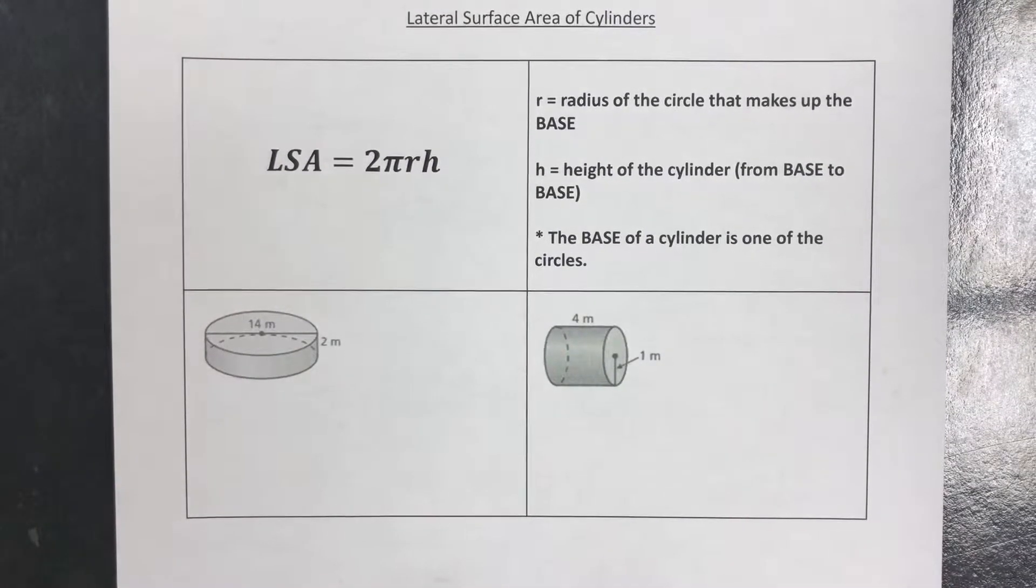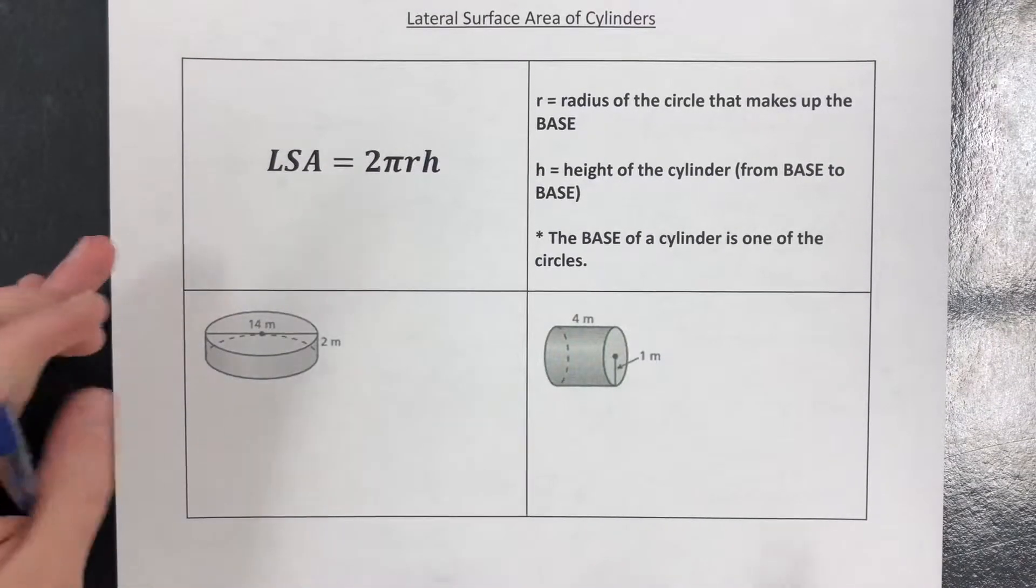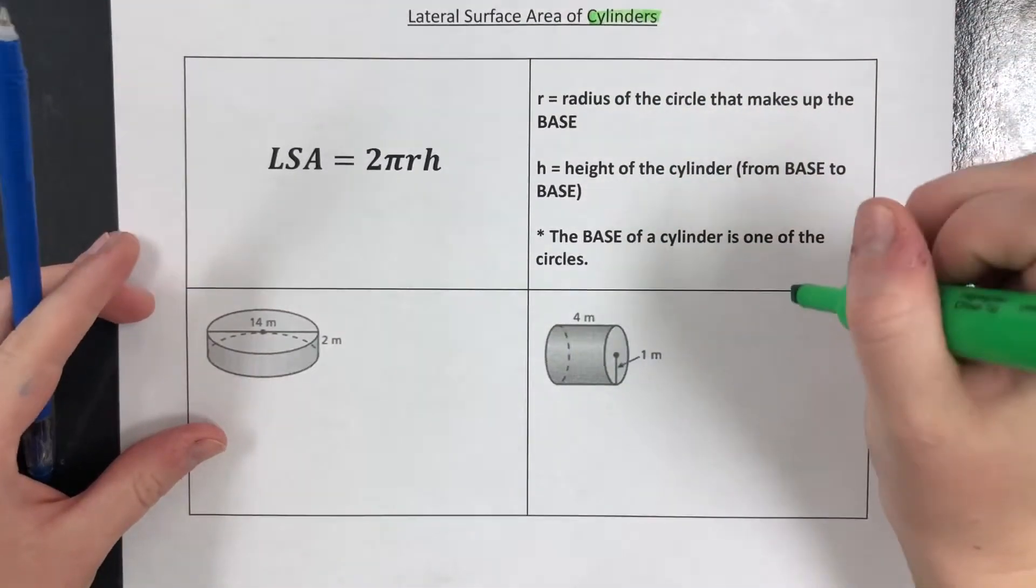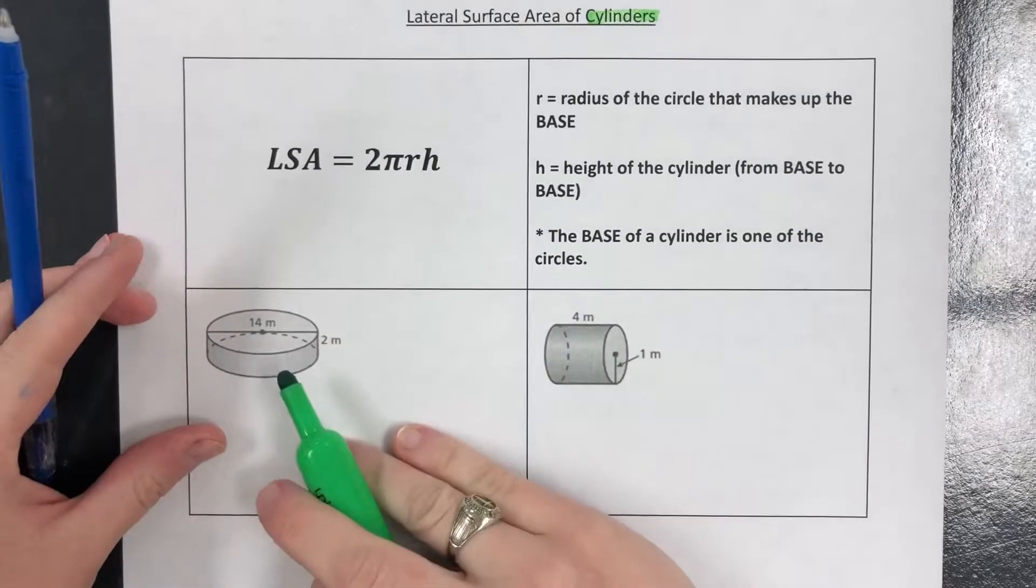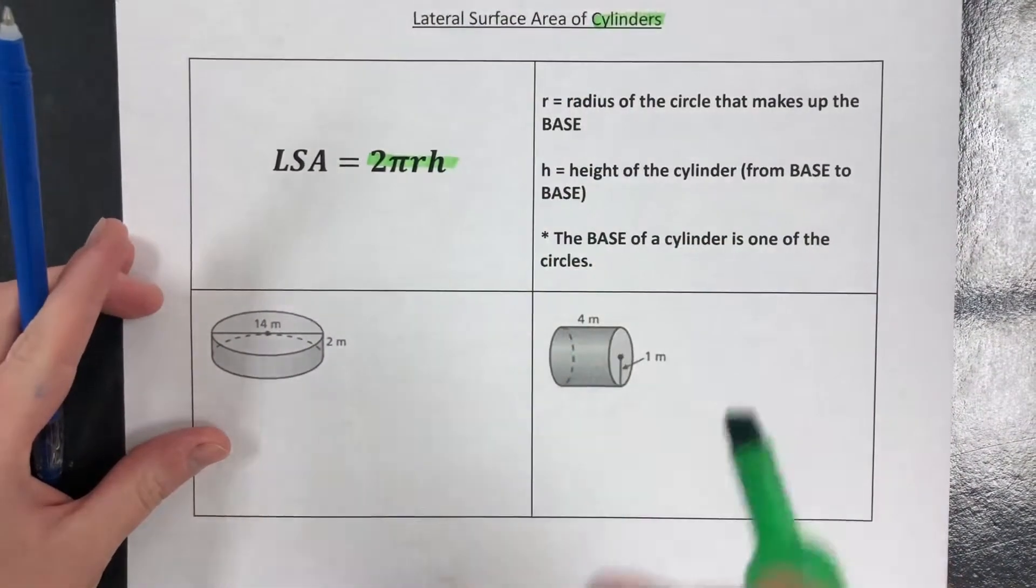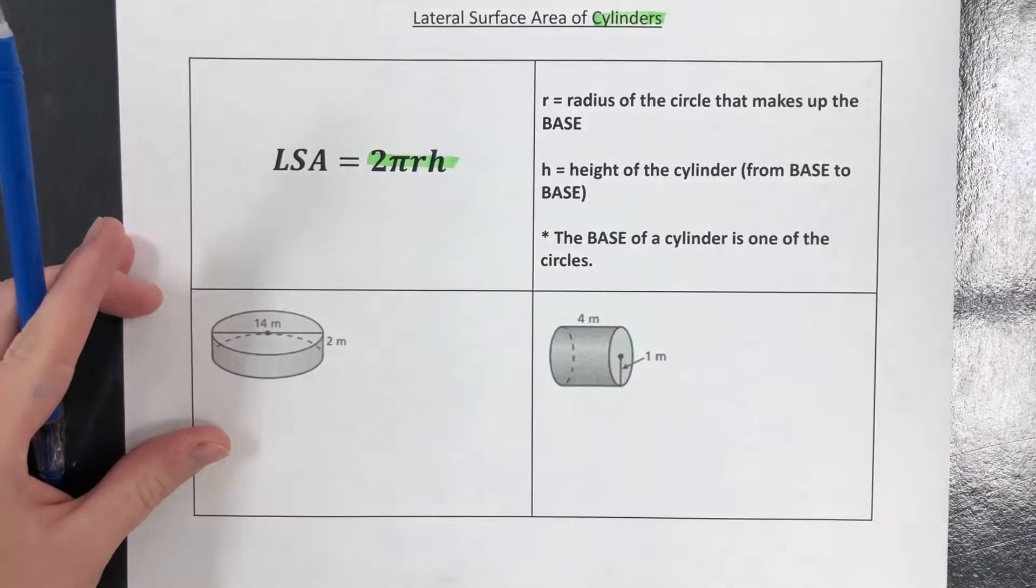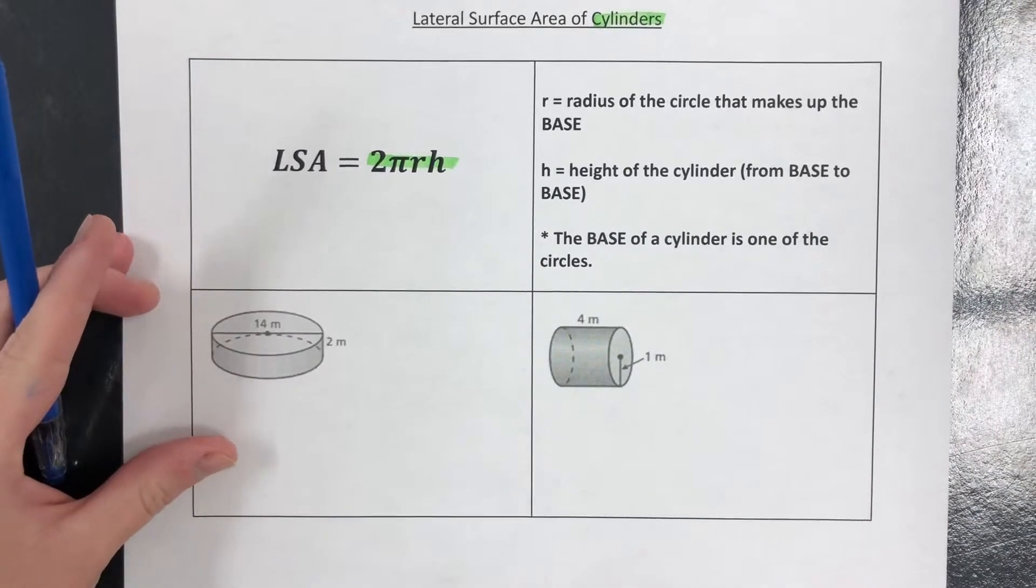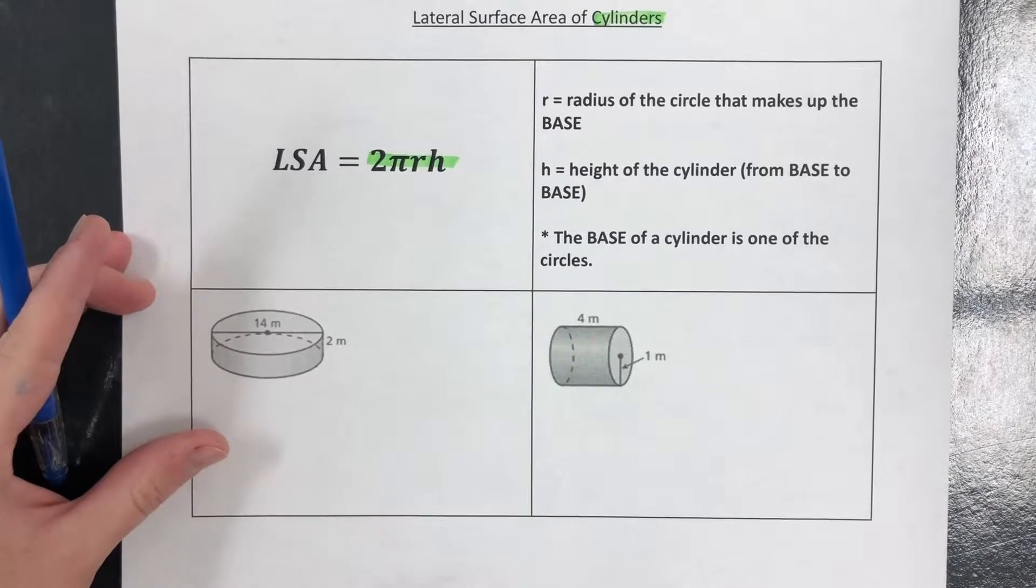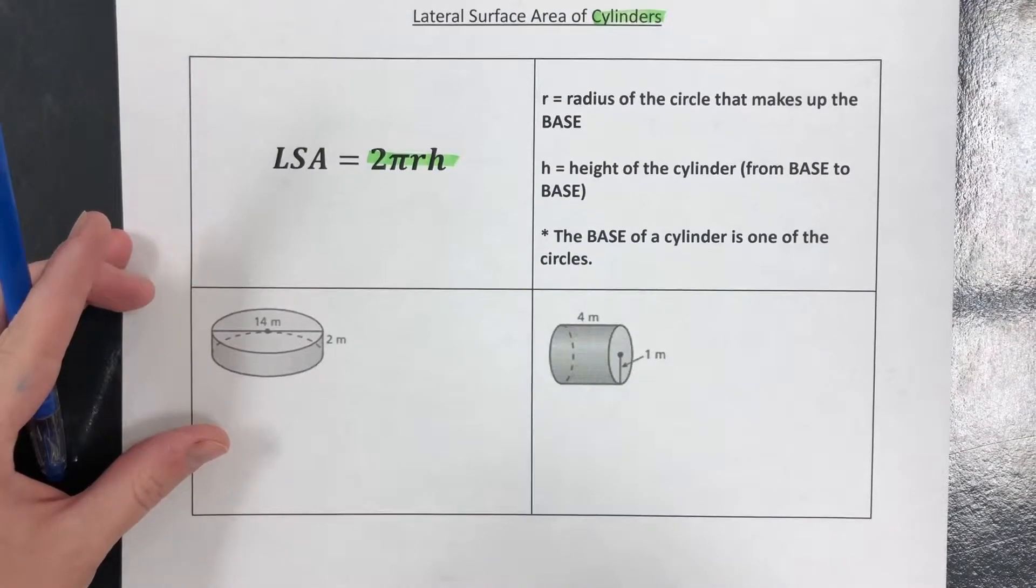Okay, and our last piece for surface area is the lateral surface area of cylinders. Notice that we don't have that big long formula anymore, all we have is 2πrh, so the first part of it. Total surface area would have been both bases, so both circles and the lateral face, the rectangle.